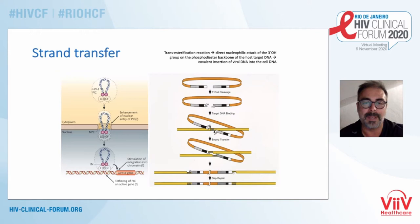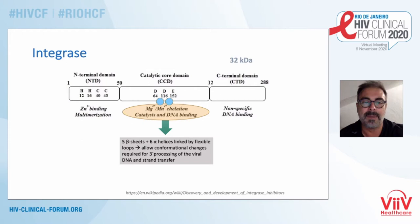That is done through a very specific mechanism involving a trans-esterification reaction with a direct nucleophilic attack on the 3' group of the DNA, so that the HIV genome is inserted into the host genome, usually near active genes. The integrase has three domains: an N-terminal domain involved in zinc binding and multimerization, a catalytic core domain where a DDE motif linked to magnesium cations induces this ester reaction, and a C-terminal domain. Most resistance mutations occur in the catalytic core domain.